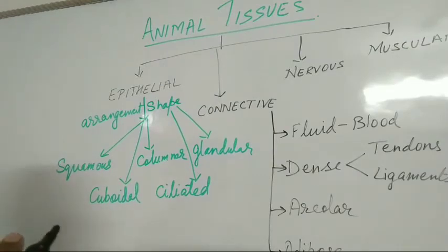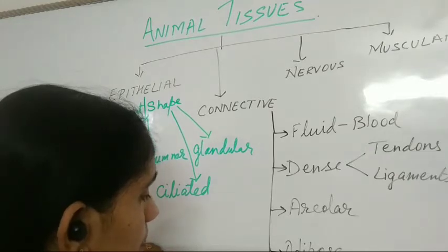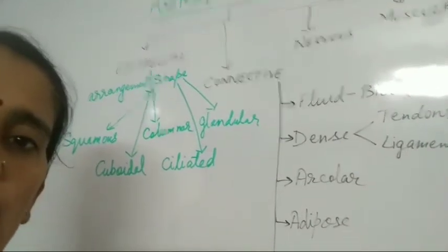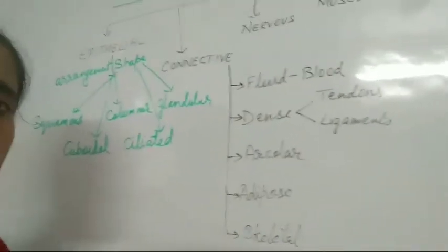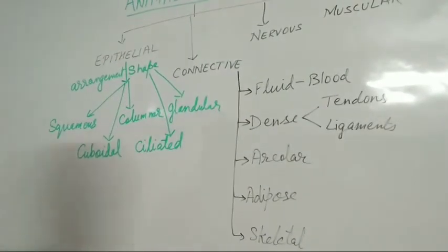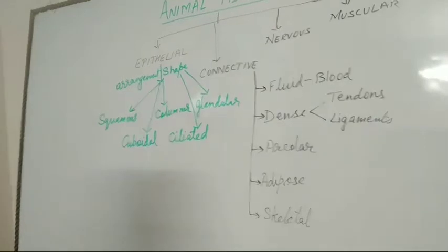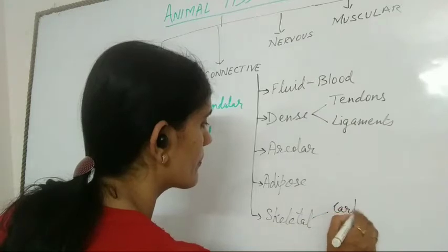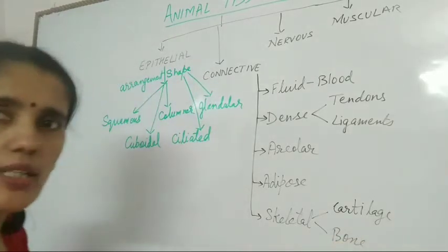And last is skeletal tissue. Skeletal tissue gives shape to the body and forms the skeleton. Skeletal tissues are mainly of two types: cartilage and bone.